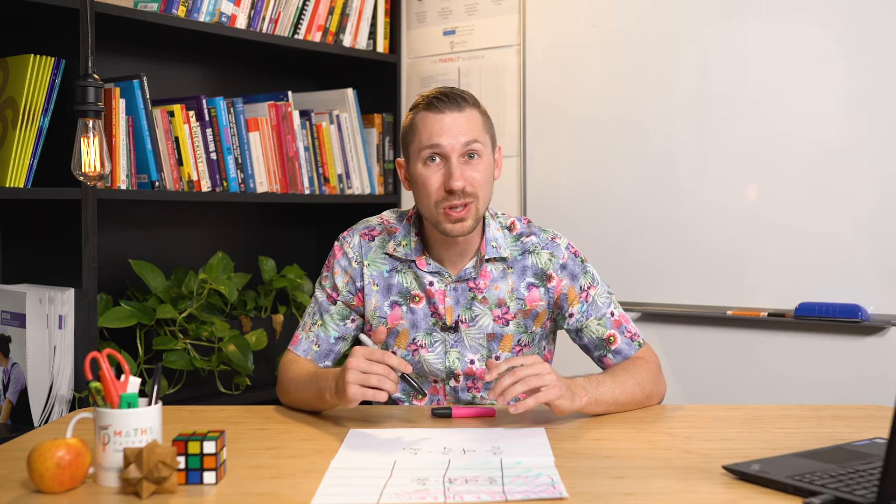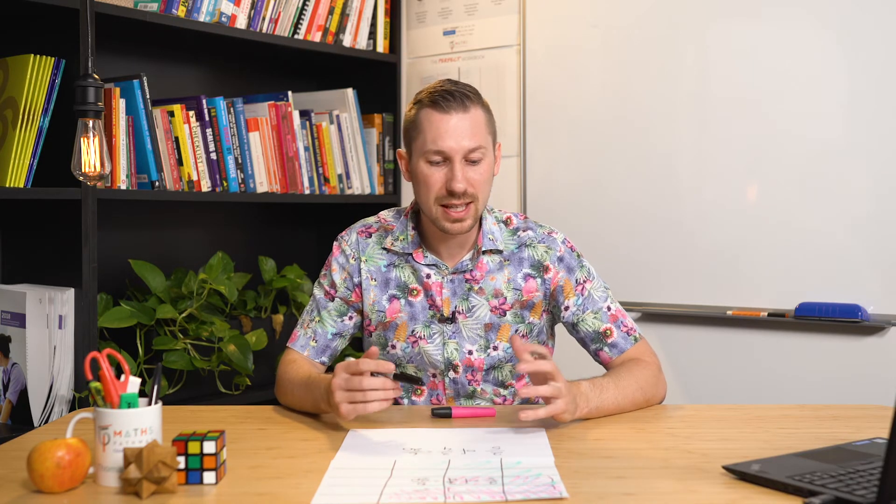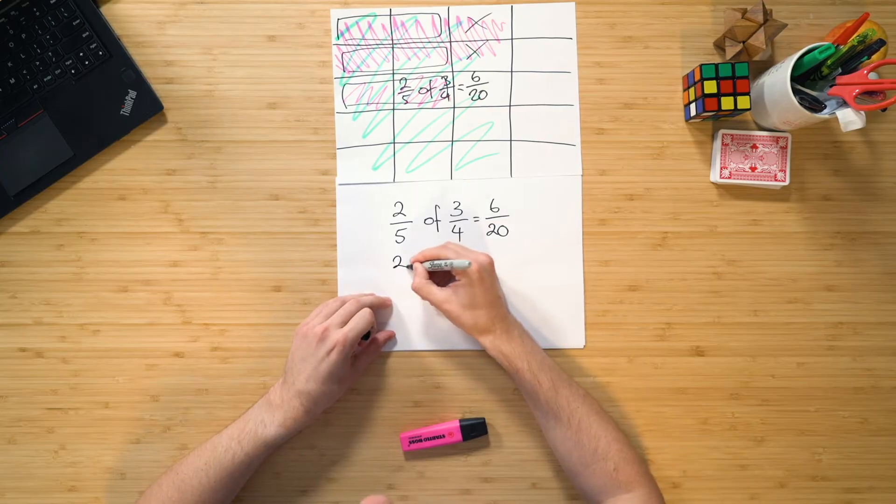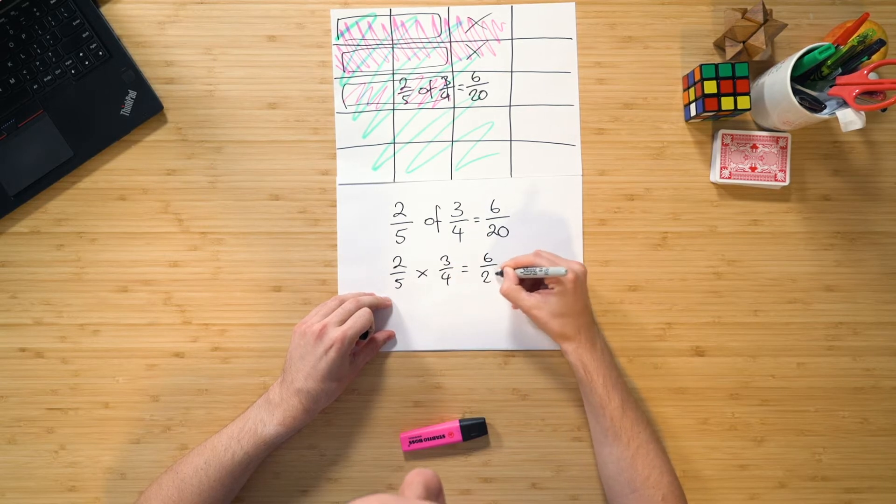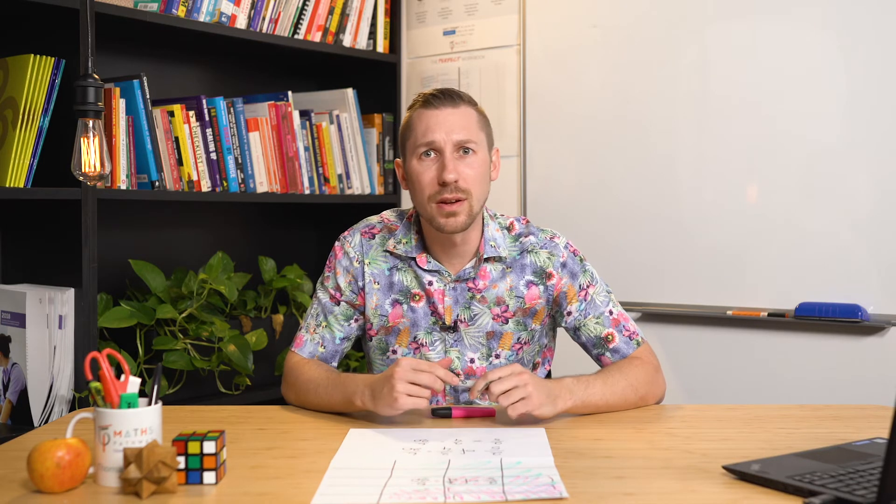Now at this point, hopefully some students, when they've got lots of different examples in front of them, they may be able to recognize that instead of writing of, we can simply write times. That is, two fifths times three quarters is equal to six twentieths. And that actually makes sense because there are other examples where we can say times instead of of.